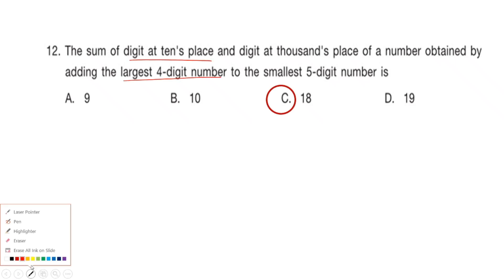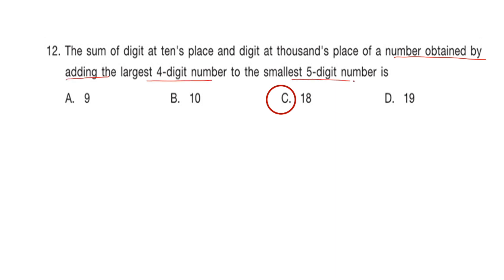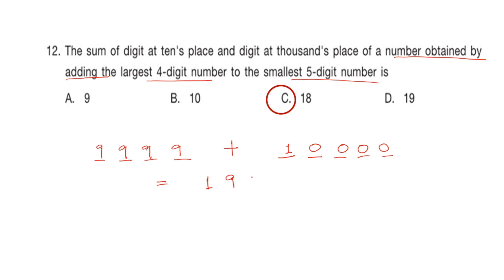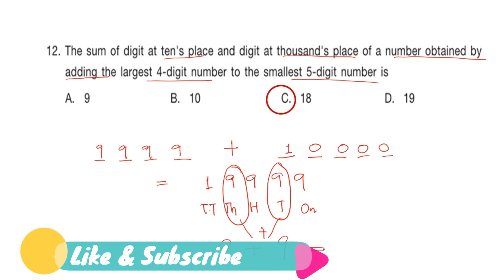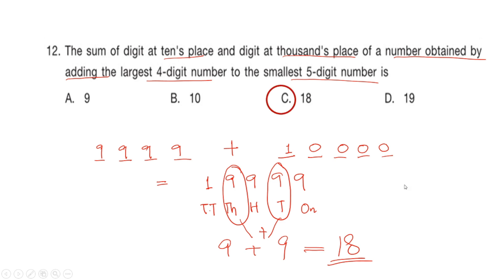The answer is option C: 18. First, we find the number obtained by adding the largest four-digit number to the smallest five-digit number. The largest four-digit number is 9,999 and the smallest five-digit number is 10,000. So 10,000 + 9,999 = 19,999. The tens place digit is 9 and the thousands place digit is 9. Adding them: 9+9=18. So the right answer is option C: 18.